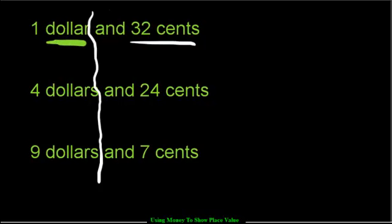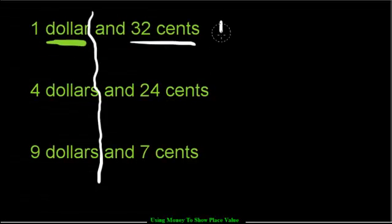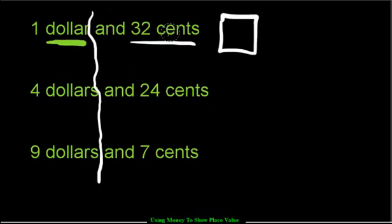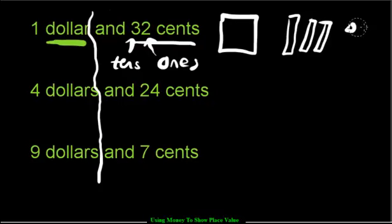So we have $1. Going back to what we know, a dollar is the hundreds. How many do I need? It says $1, so I just need one hundred. Then $0.32 — that means I need three tens and two ones. So I'm going to go three tens — long skinny ones — one, two, three, and I need two ones — one, two. This is $1.32.